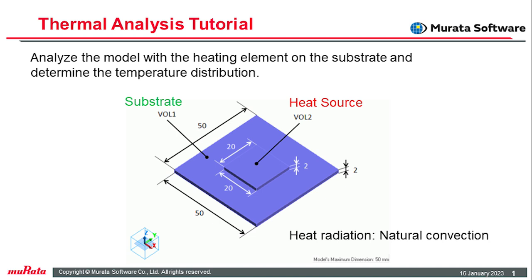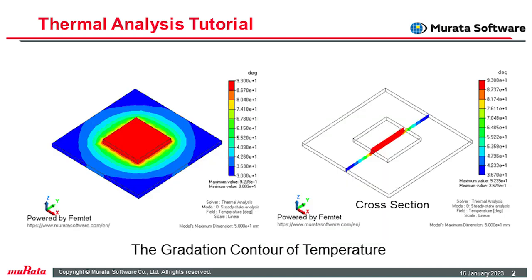Heat radiation by natural convection is solved in this tutorial. A heat source is placed on a substrate, and the substrate is placed in the air. The substrate VOL1 and the heat source VOL2 are created as solid body boxes, and the heat source is defined in the body attribute of VOL2. Natural convection is set on the model surface. As a result of the analysis, check the temperature distribution in a gradient contour diagram, in an overall view, and in a section view.